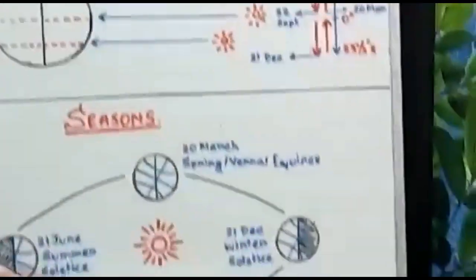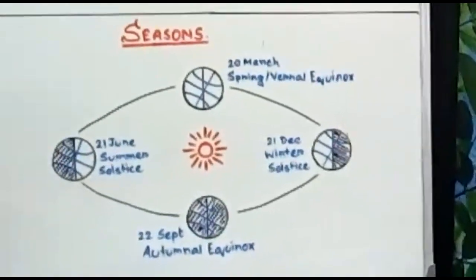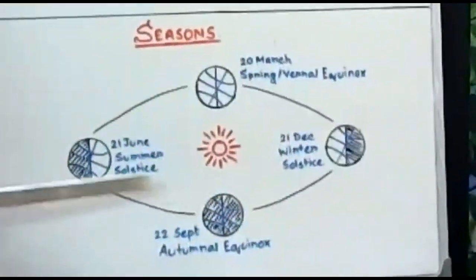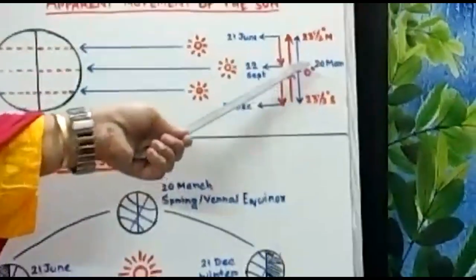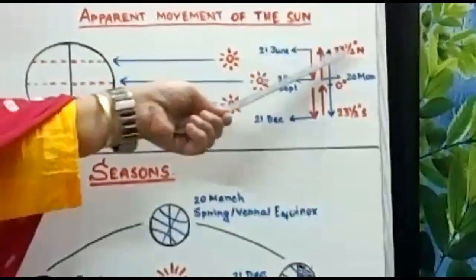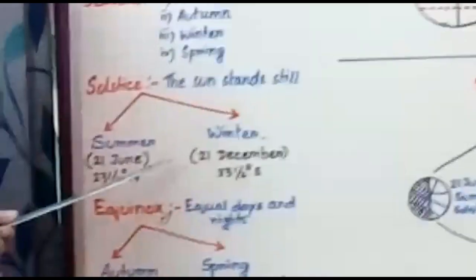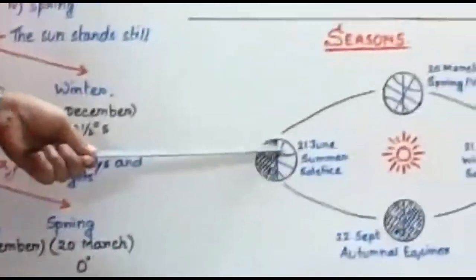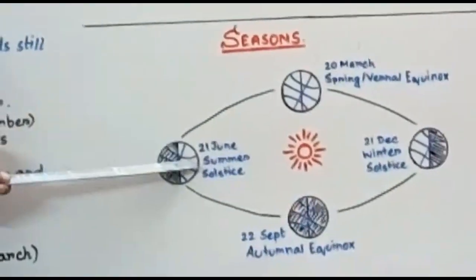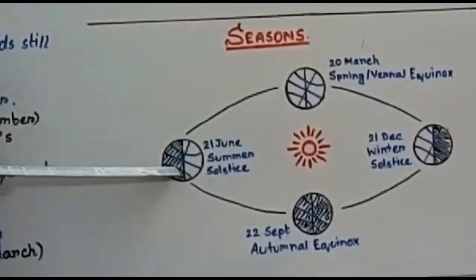Now, coming to season change — the inclination of the earth's axis and revolution are responsible for the season change. When the sun moves towards the north and reaches 23.5 degrees north on 21st June, it is called the summer solstice. The northern hemisphere is inclined towards the sun and gets maximum heat, so summer occurs in the northern hemisphere and winter occurs in the southern hemisphere.